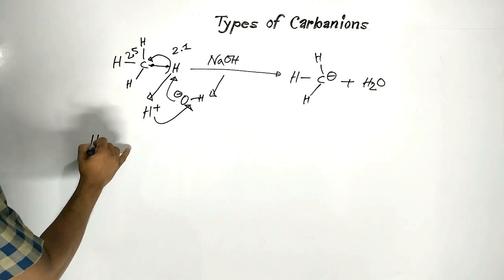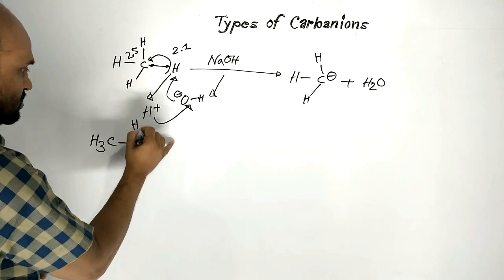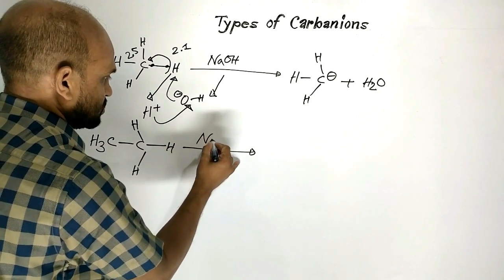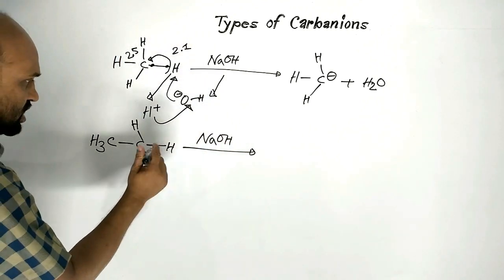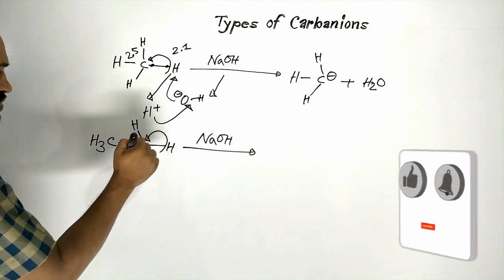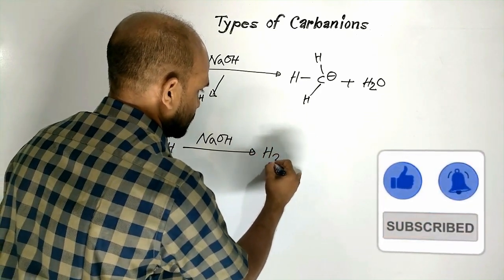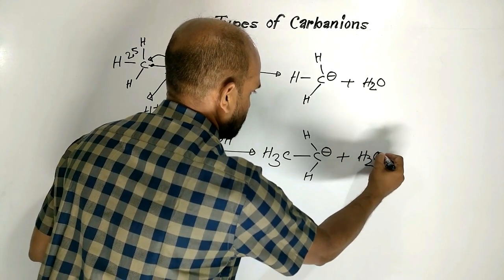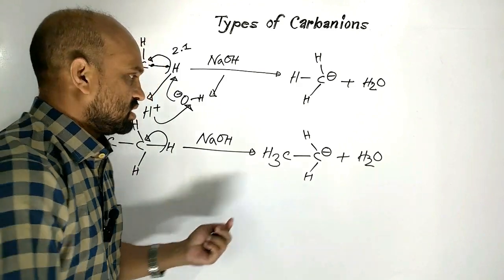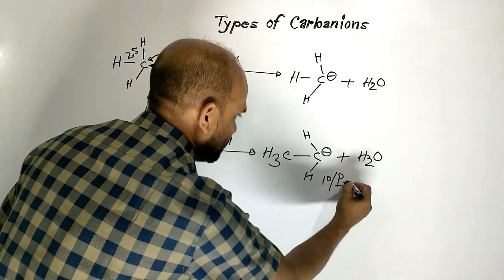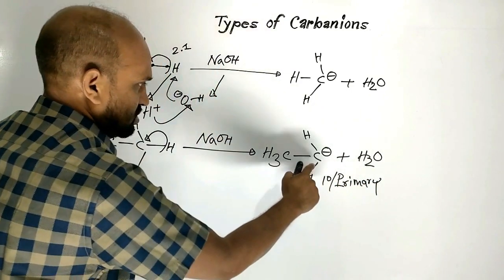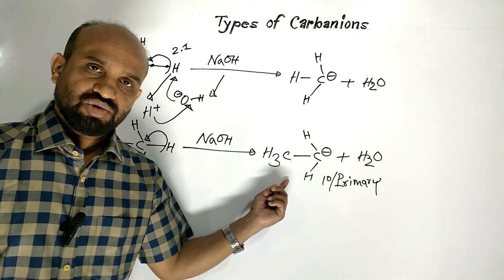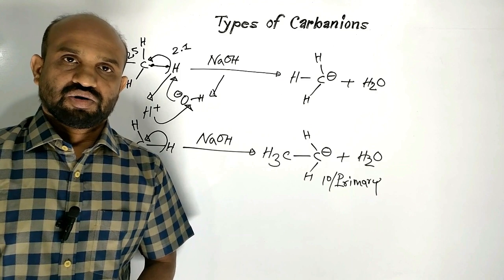Let us take another compound — ethane. When this is treated with alkali, sodium hydroxide, then this carbon-hydrogen bond experiences heterolytic fission. As a result, this ethyl carbanion is formed. It is a kind of one-degree or primary carbanion, because the carbon with the negative charge is attached to only one carbon atom. That is why the ethyl carbanion is a primary carbanion.